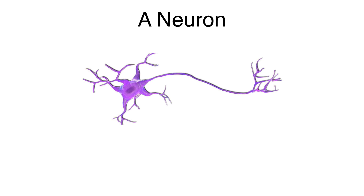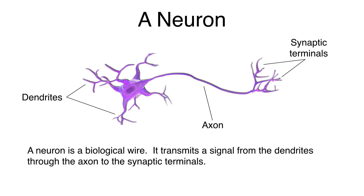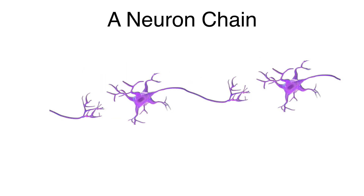Let's talk about a neuron. It has different parts: the tree structure at the left end is called the dendrites, the long portion is called the axon, and the tree structure at the right end is called the synaptic terminals. A neuron is like a biological wire — it transmits a signal from the dendrites through the axon to the synaptic terminals. Neurons are often arranged in a chain, and the action potential travels along the axon, releasing a neural transmitter. As long as enough of that neural transmitter gets released, it causes the next neuron in the chain to also fire.